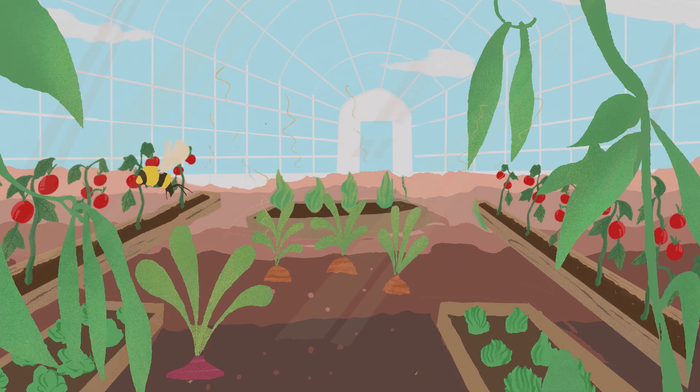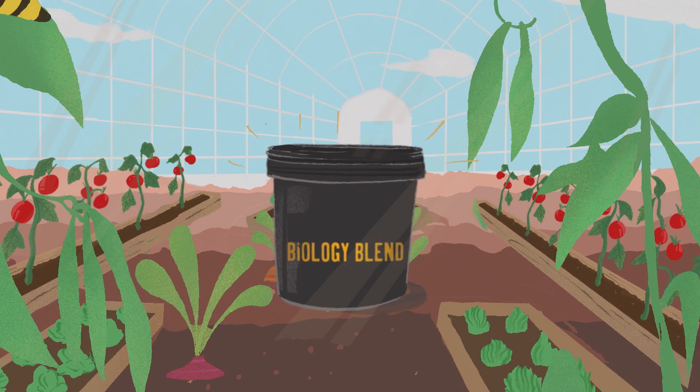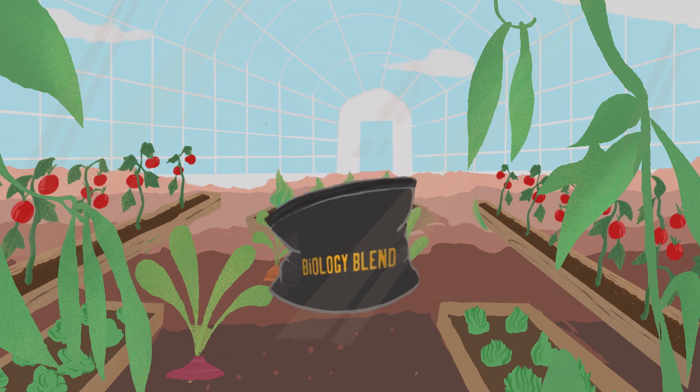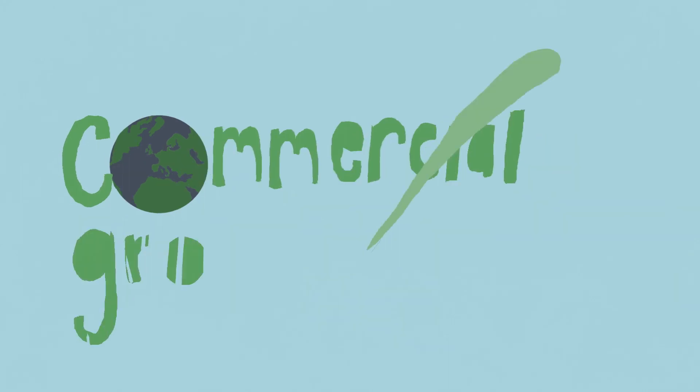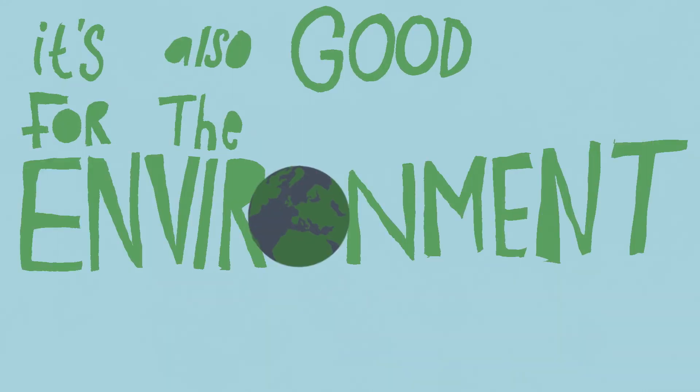But our most potent crop growing product is Biology Blend, which is like organic rocket fuel, used by both organic and conventional commercial growers. It's also good for the environment.